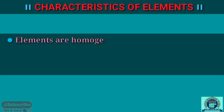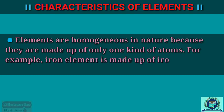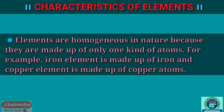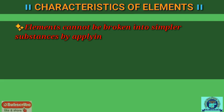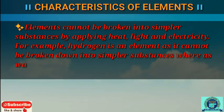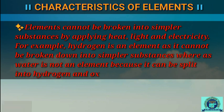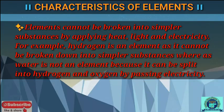The characteristics of elements are: first, elements are homogeneous in nature because they are made up of only one kind of atoms. For example, iron is made up of iron atoms and copper is made up of copper atoms only. Second, elements cannot be broken into simpler substances by applying heat, light, or electricity. For example, hydrogen is an element as it cannot be broken down into simpler substances, whereas water is not an element because it can be split into hydrogen and oxygen by passing electricity.